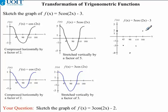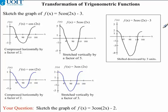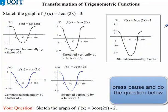We have simply shifted our previous graph downwards by 3 units. We now connect these dots so they have a similar shape to our previous graph. Here is our final graph. I would now like you to complete the question that you were given.